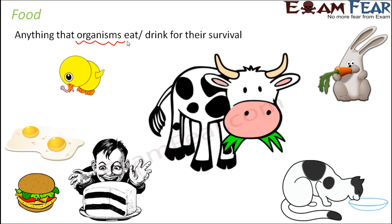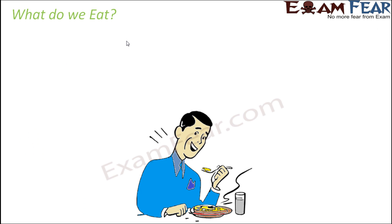Food is anything that we eat, and 'we' refers to all living organisms, not only human beings. Now what exactly do we eat? In the beginning of this lesson we will consider human beings, since we can relate to what we eat. If I ask you what are the things you normally eat, you might say vegetables, fruits, and those who are non-vegetarian might say fish, meat, or egg.